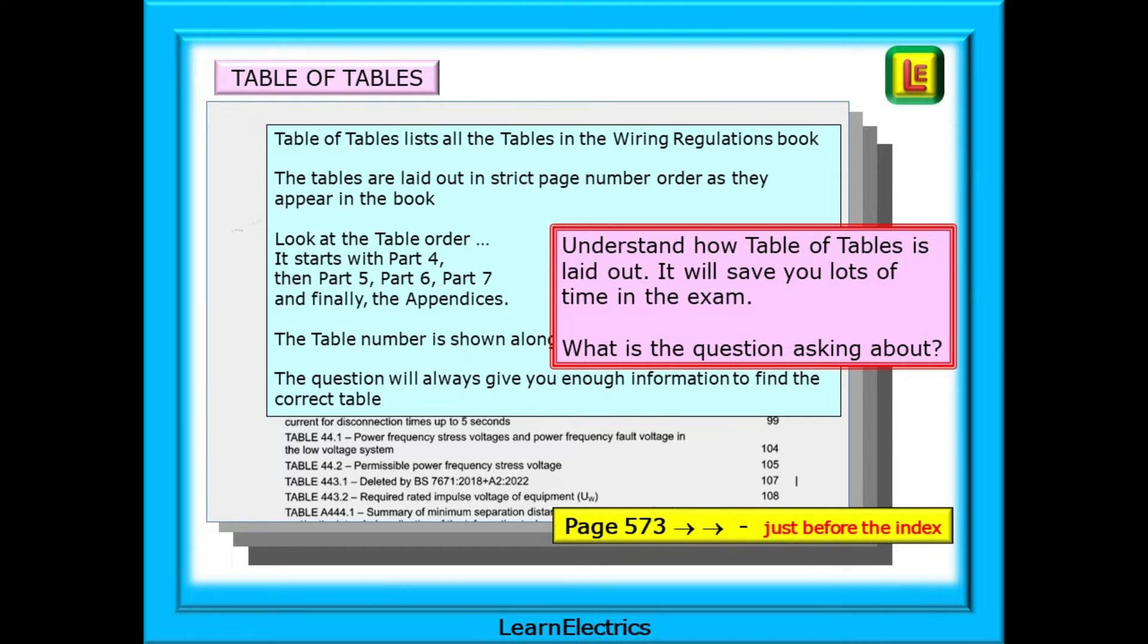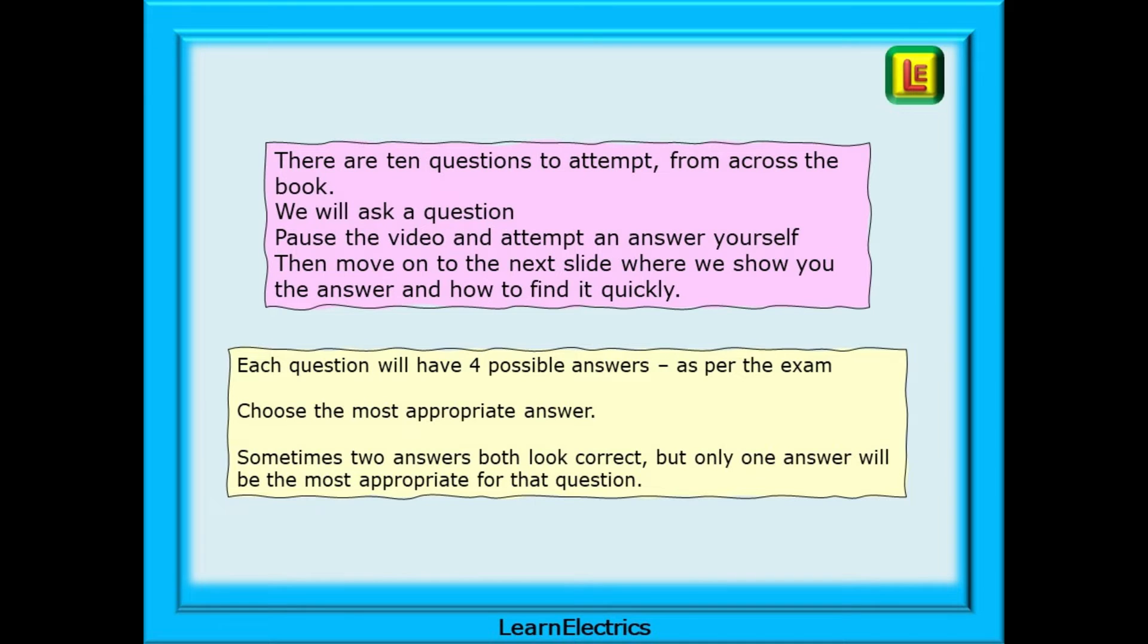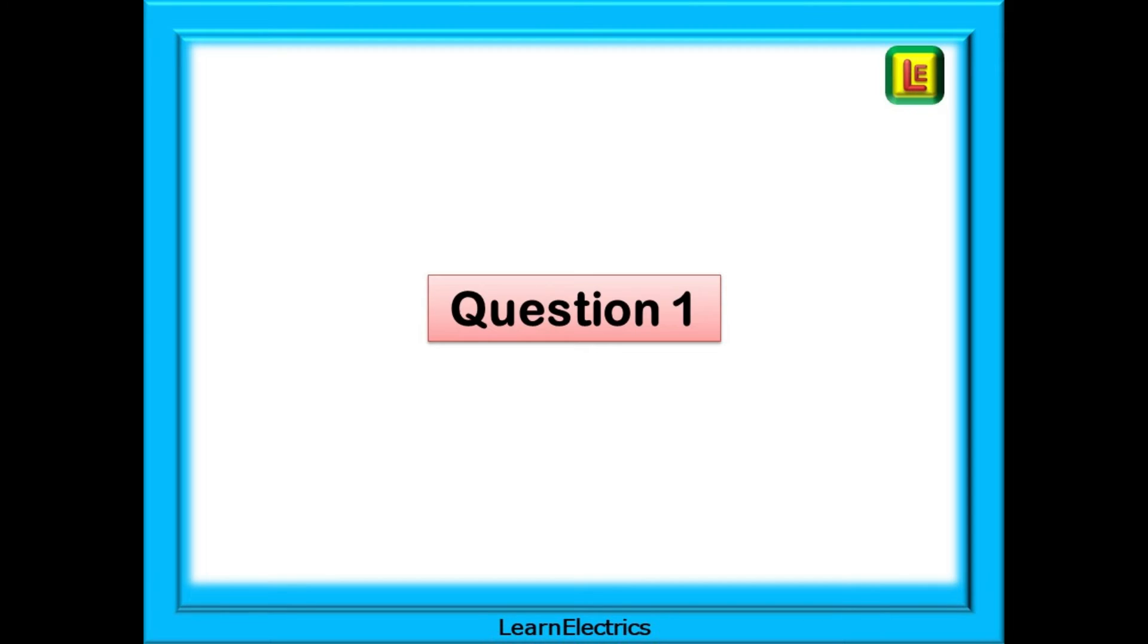What is the question asking about? Which table is it suggesting that you look at? There are 10 questions to attempt from across the book. We will ask a question and suggest that you pause the video and attempt an answer yourself. Then move on to the next slide where we show you the answer and how to find it quickly. Each question will have 4 possible answers, as in the exam. Choose the most appropriate answer and be aware that sometimes 2 answers both look correct but only 1 answer will be the most appropriate for that question. Straight into the questions then. We begin with question 1, a popular question and something that we should all know.